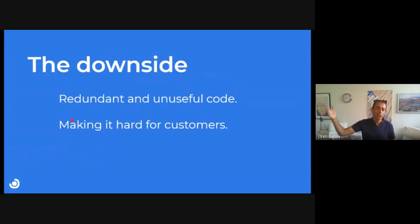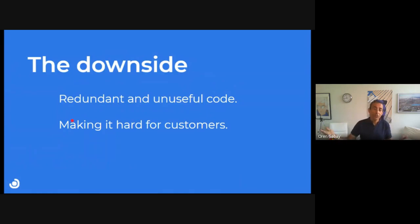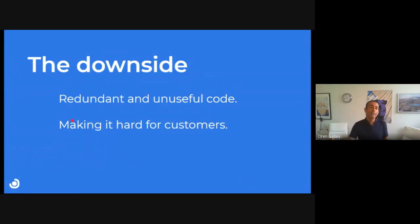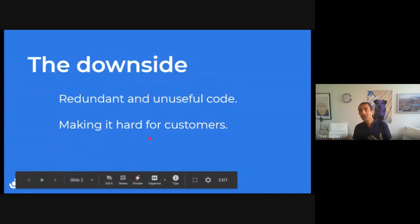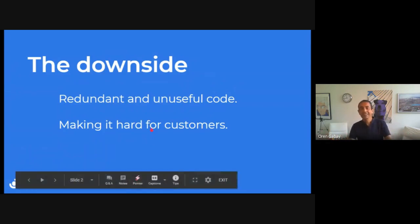Let's say we write a software — a great software that helps the customer — but actually everything we put in to manage licenses is redundant code. Nobody is really using it; we use it because we have to, but it doesn't contribute anything to the purpose of the software. And it actually makes it harder for customers to use our software. So it's really a problem.